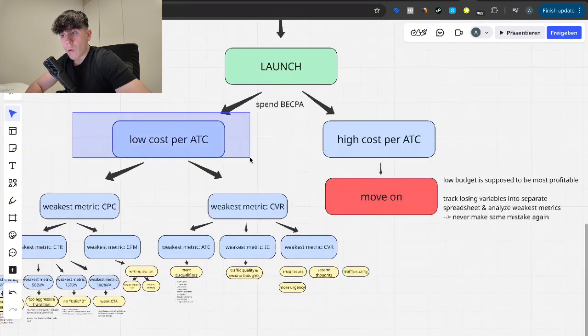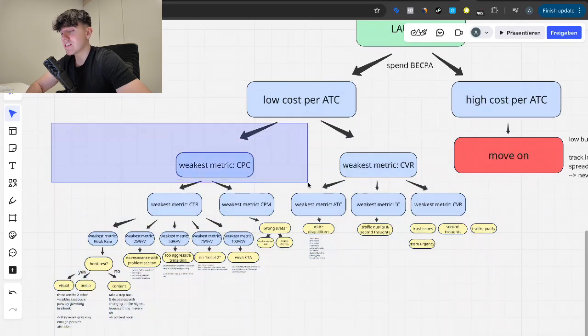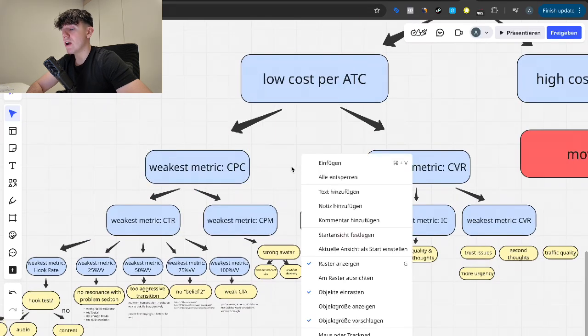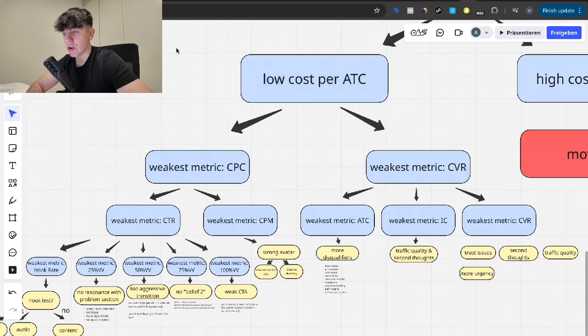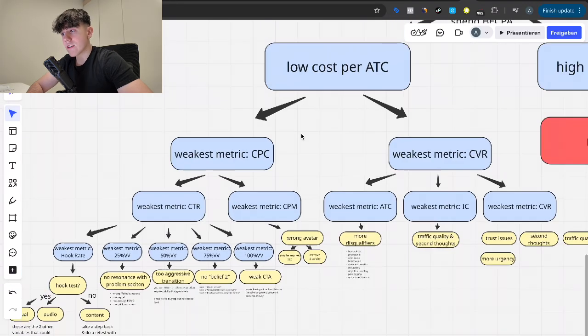Now the stuff with a low cost per add to cart, and now we're getting into the interesting stuff. There's a lot coming up. I'm not just going to tell you guys to just scale by 20% every single day, end of the video. No. We're actually going to analyze the weakest metric of the good ad, the good ad which has a low cost per add to cart. We're going to analyze the weakest metric. And so on a surface level, it can only be these two things. It can either be the CPC or be the conversion rate.